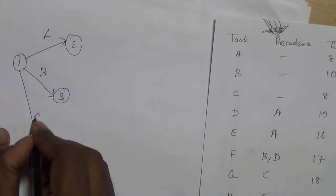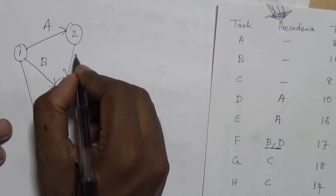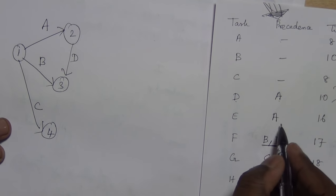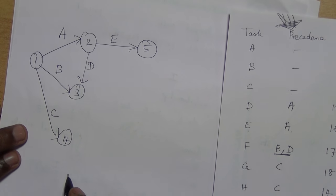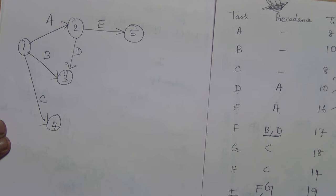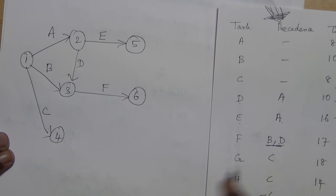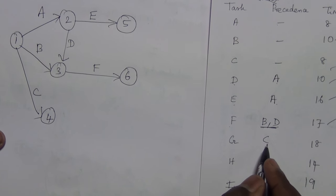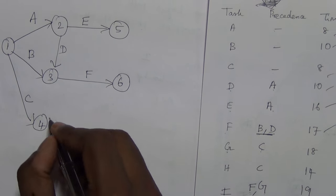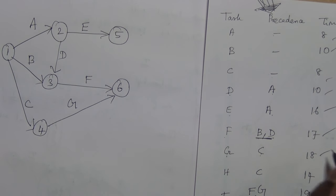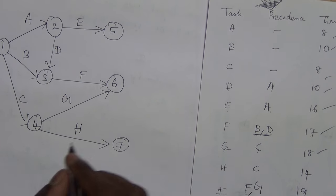So we draw A, B, C. After completing A we have D, but D is combined with B so we combine them with D. After A we have E — E doesn't combine with any of these activities so we draw E separately. Then after B and D we have F. G is combined with F, and after C we draw G by combining with F. After C we also have H, and after F and G we have I.